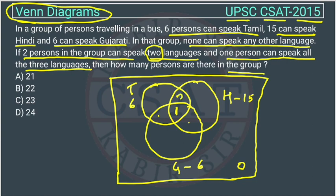Let's assume 2 in the Tamil-Hindi intersection. You can also assume 1 and 1 — the answer will remain the same. I am assuming 2 here, which means the other intersection regions will be 0, because only 2 people total can speak 2 languages.